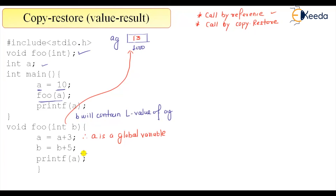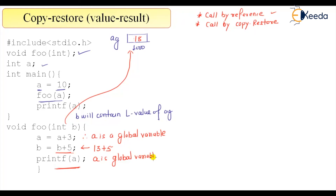Then b = b + 5: since b is also pointing to the same location as ag, the value 13 becomes 13 + 5 = 18. When printf(a) executes inside the function, it prints 18 since a is the global variable. After the function terminates and we return to main, printf(a) again prints 18. So in call by reference, the output is 18, 18.